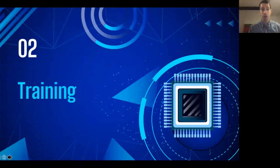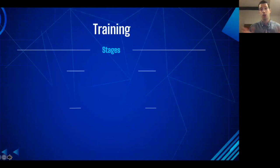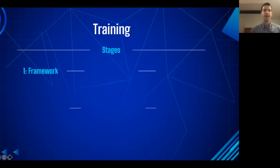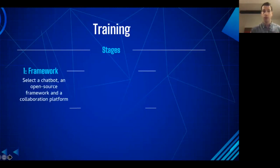Now we're done with the first stage, and the second one commences: training. Training is the most complex stage. I've broken it down into six steps — this does not mean the steps are necessarily strictly sequential; you might go to step three, then step six, then back to step four. The first step is the framework, and this is critical. You need to make three choices. First, you need to select a chatbot that already exists in the market, unless you want to create your own from the ground up.